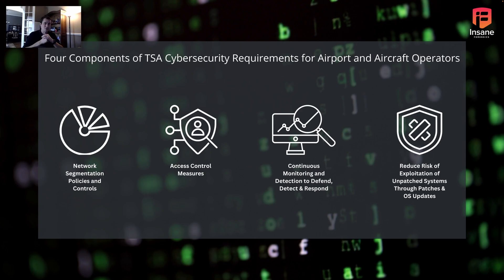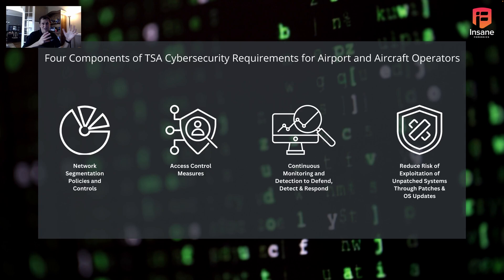The second part is access control measures — who's getting into where and what are they using. You have your segmentation, now who's actually crossing those lines? Where are users authenticating and how are you handling access management? Because at an airport there's a lot of public, a lot of strangers, a lot of different groups, so keeping people in the right segments and out of the wrong segments is critical.